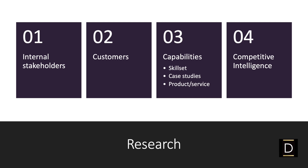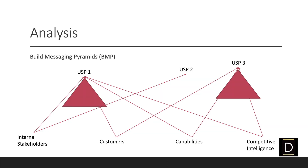These are the four areas to research, and this input is going to be very valuable in your value proposition development exercise. Step two is analysis. Look for patterns and strong points emerging from the data you have collected. I use a technique called building messaging pyramids, where I link the values suggested by all four areas of research. There will be a few that come out a lot stronger than the others — pick these strong ones and proceed to the next stage.